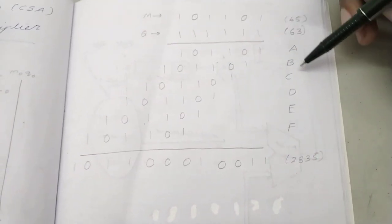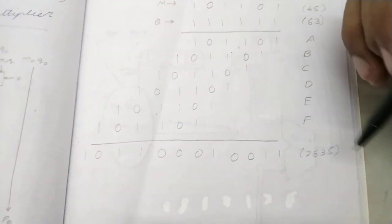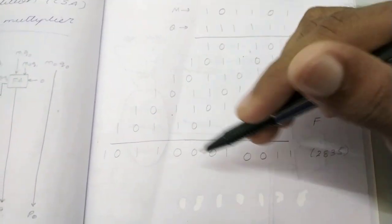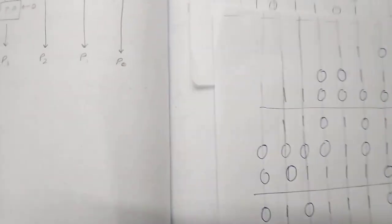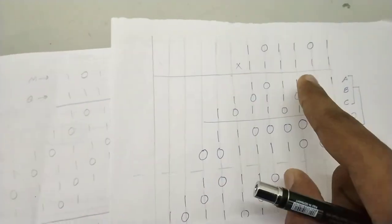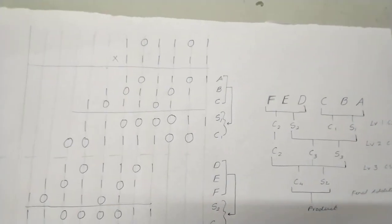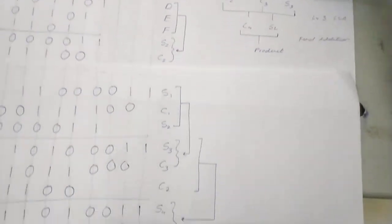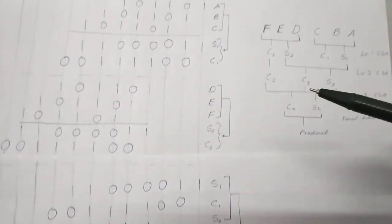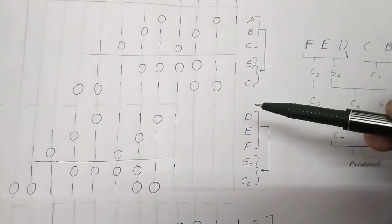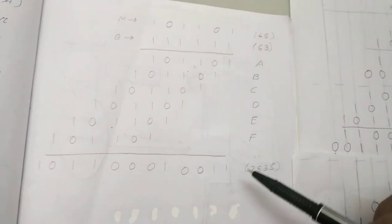We name the six partial products a, b, c, d, e, and f. We want to see how these partial products can be added using the carry save adder. We have a roadmap: first we have a, b, c and also d, e, f. These are the partial products that were formed — a, b, c and d, e, f.